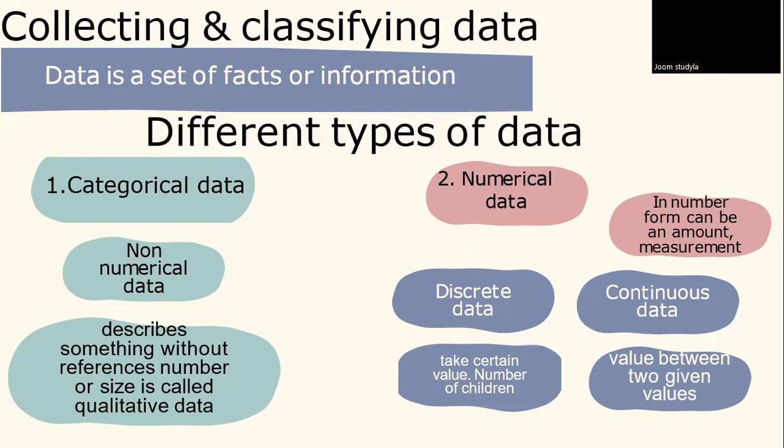And secondly, we have numerical data. Numerical data is data in number form. It can be an amount, a measurement, a time, or a score. Also, numerical data is called quantitative data.